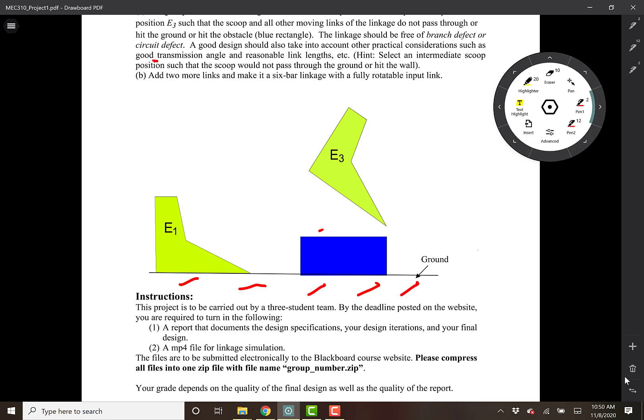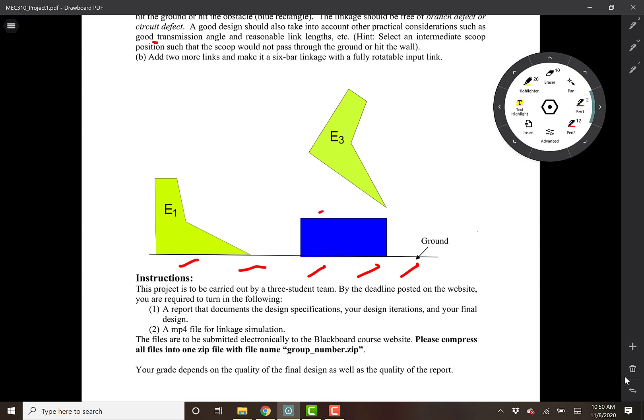Now, the linkage simulation is for your final design, your final selected design. You have to do multiple design iterations, at least three, and then pick the best iteration. It is important to note that your grade depends not only on the quality of your final design but also the quality of your written report. So make sure the report is written properly.